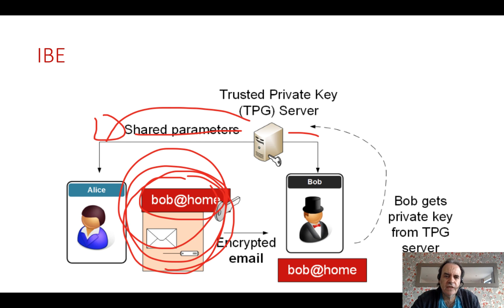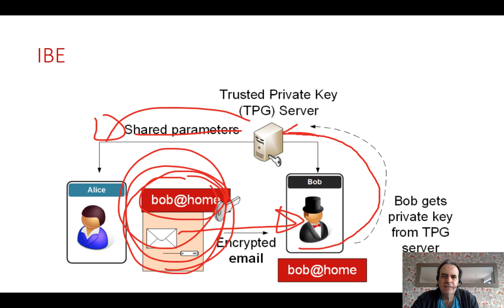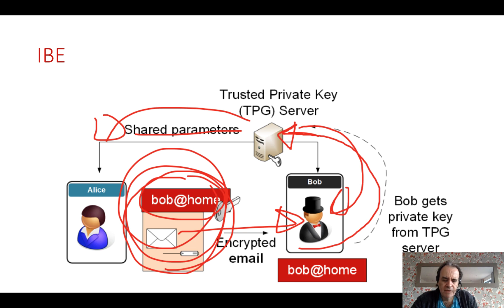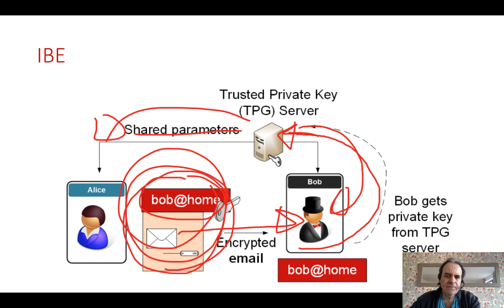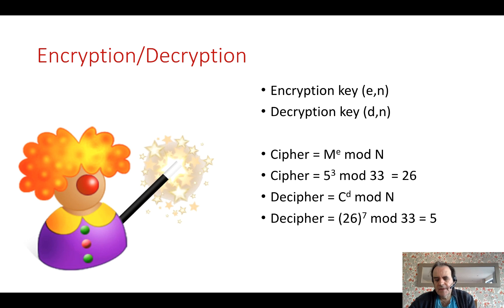We take Bob's identity (e.g., 'bob@home'), perform a calculation, and generate Bob's public key. That gets sent to Bob, and Bob provides his identity to the TPG, which generates his private key for decrypting messages. This way, Alice can send encrypted messages to Bob even though Bob doesn't actually have a pre-existing encryption key.